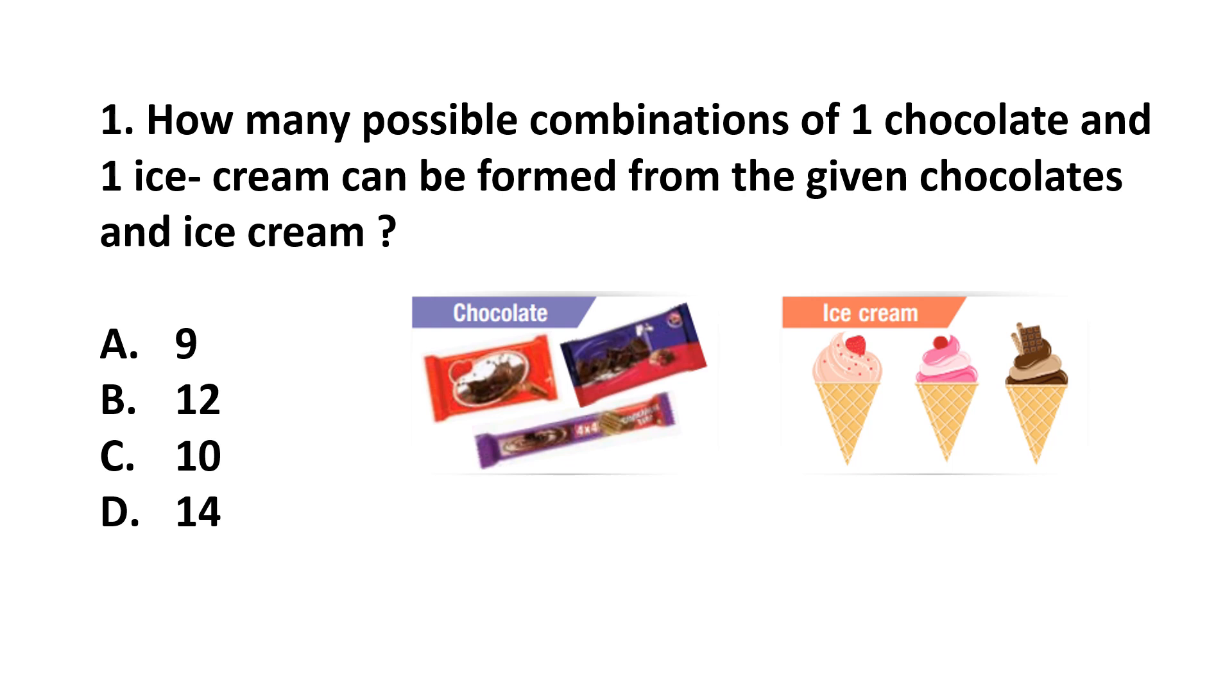Question number 1. How many possible combinations of one chocolate and one ice cream can be formed from the given chocolates and ice creams? Let's check. How many chocolates are there? There are total 3 chocolates and 3 ice creams. Possible combinations are 3 multiplied by 3 equals 9. So, we can make 9 combinations from these groups. Answer is option A.